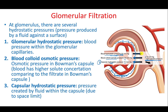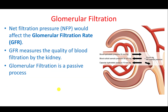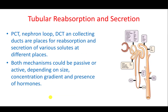However, as long as the blood hydrostatic pressure is higher than both the colloid osmotic pressure and the capsular hydrostatic pressure combined, we will have a positive net outward pressure, meaning continuous formation of filtrate. This is known as the net filtration pressure, which affects the glomerular filtration rate — a measure of the quality of blood filtration by the kidneys. Importantly, filtration is entirely a passive process; no ATP is used.